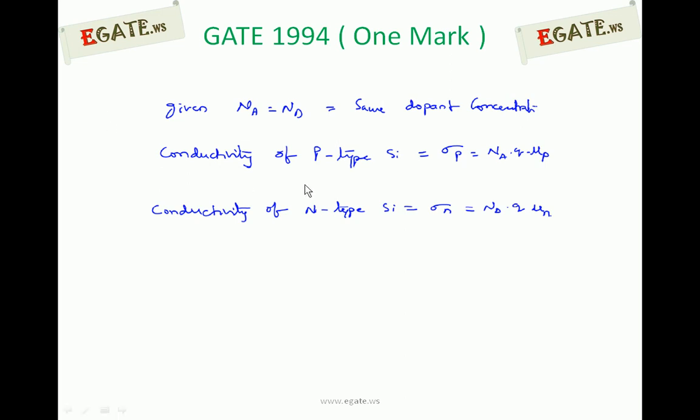We know the conductivity equation. Conductivity of p-type is approximately sigma p equals Na into q into mu p. We have neglected the conductivity due to minority carriers, because minority implies very small compared to majority carriers. So we are considering only the conductivity due to majority carriers for both p-type and n-type.